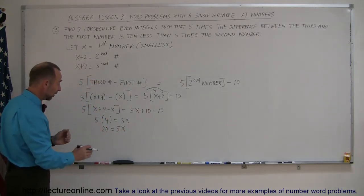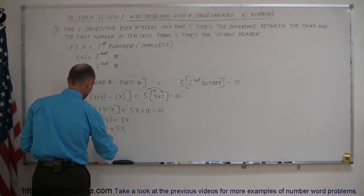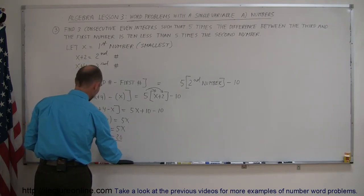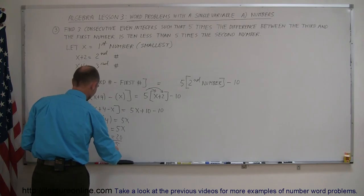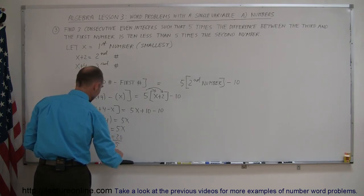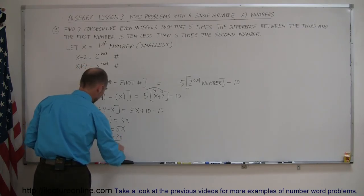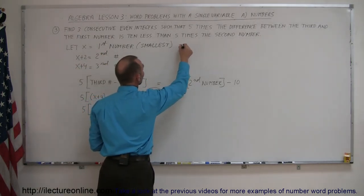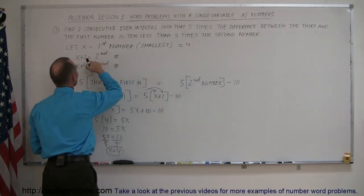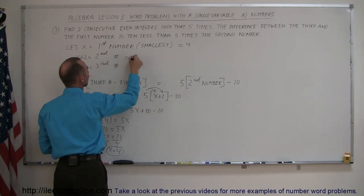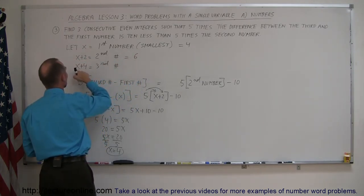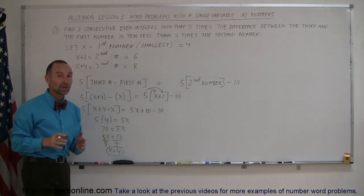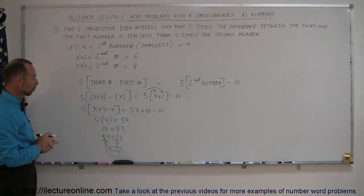I'm going to turn the equation around — move the 5x over here and the twenty over there. So, 5x equals 20, and now we divide both sides by the coefficient. So, x is equal to 20 divided by 5, which is 4. Up here we said x is equal to the first number, so the smallest is equal to 4. The second number is 4 plus 2, which is 6. And the third number, 4 plus 4, which is 8. So, 4, 6, and 8 are the three consecutive even integers we were looking for. And that's how you do that problem.